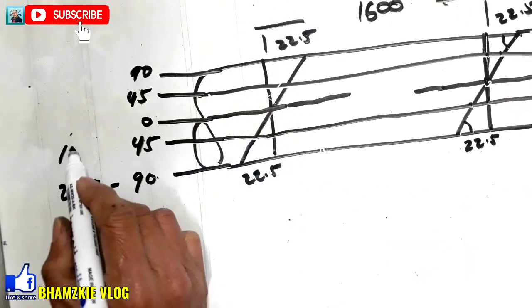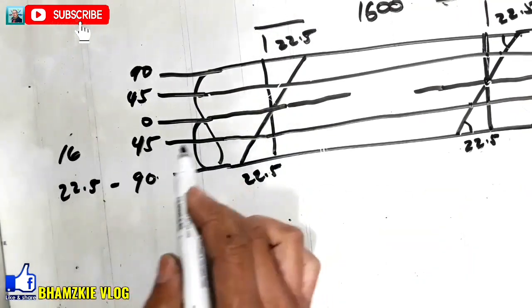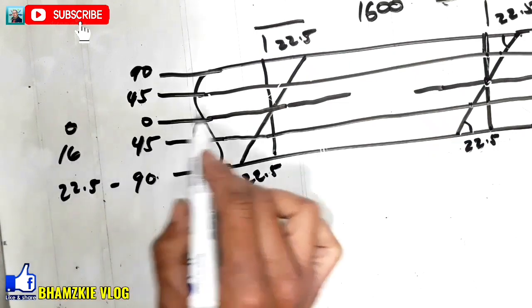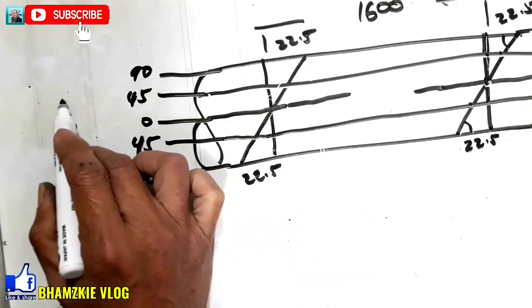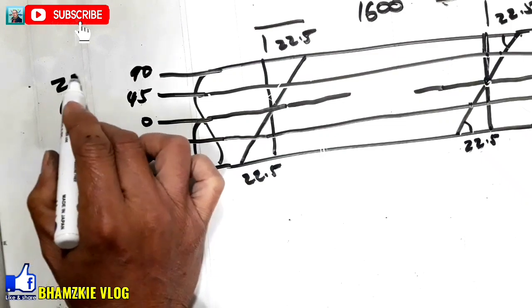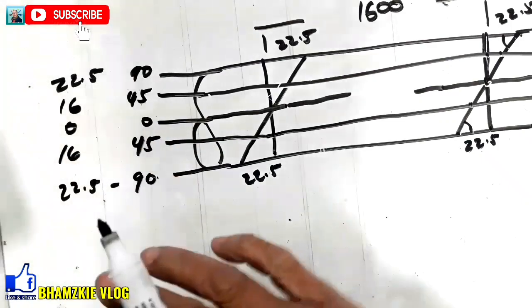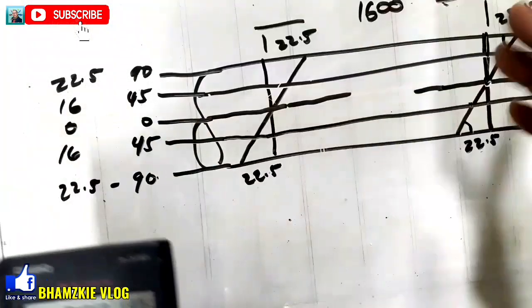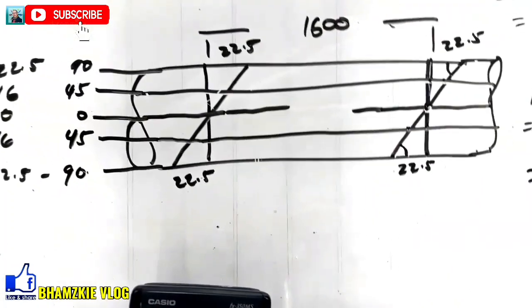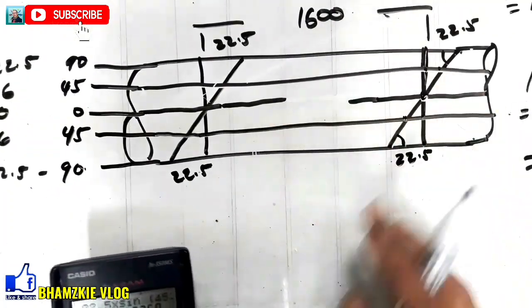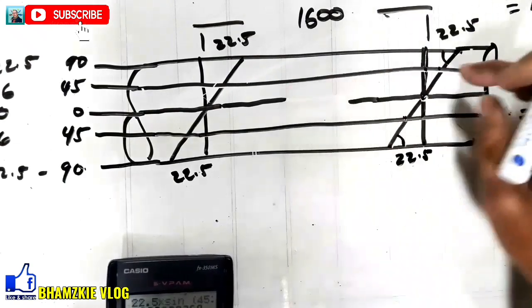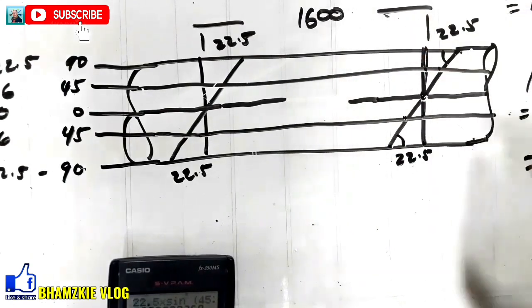16 mm. So, dito sa zero nya is zero na rin yan dahil center yan. Dito sa 45, 16, pabalik-balik lang yan mga kametal. 22.5. I-marking nyo yung inyong 5. Kuhanan nyo ng bawat distance nitong ating line dito kung ilan yung distance niya.